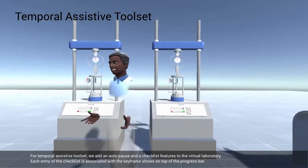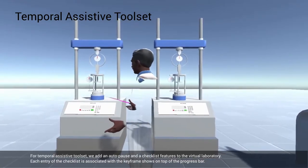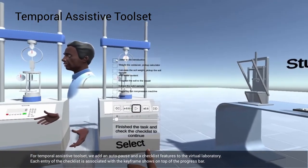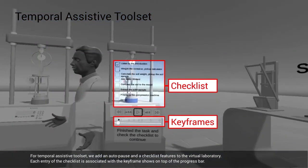For temporal assistive tool set, we add an autopause and a checklist features to the virtual laboratory. Each entry of the checklist is associated with the keyframe shown on top of the progress bar.